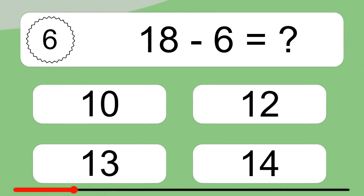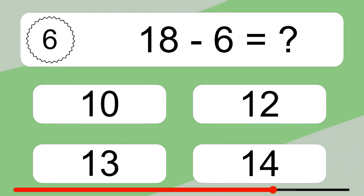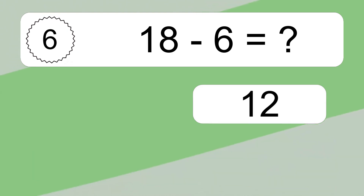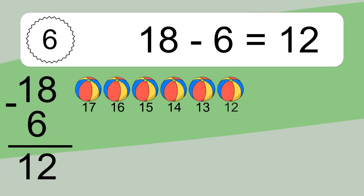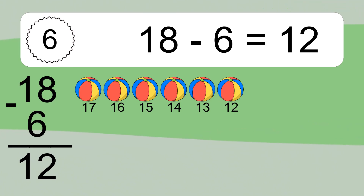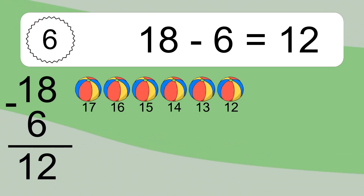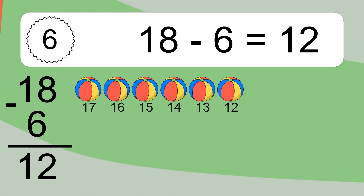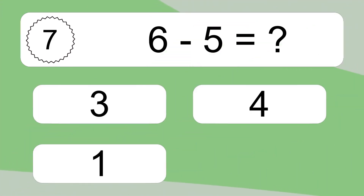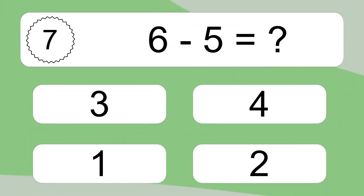18 minus 6 equals what? 18 minus 6 equals 12. Let's count it: 17, 16, 15, 14, 13, 12.